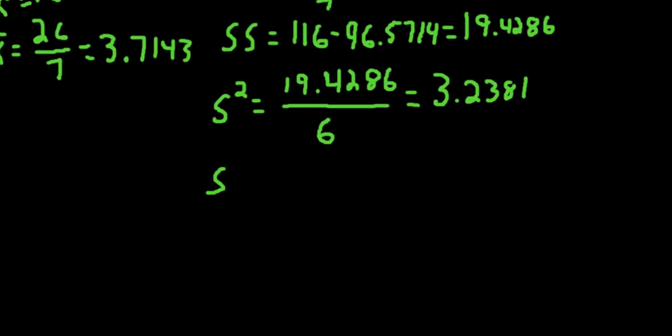Next, we can turn that into the standard deviation by taking the square root of the sample variance, bringing it back into the original units. Take the square root of 3.2381 to get the standard deviation, which is 1.7995.